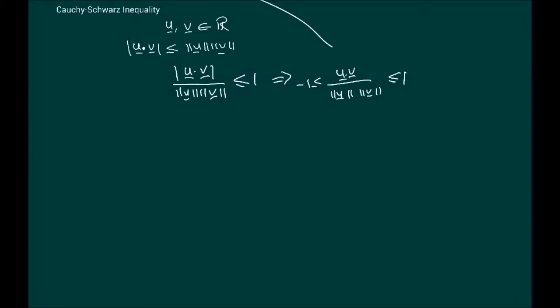What we're going to do next is prove some very interesting inequalities. We're going to look at four different laws, equalities and inequalities. The rules we're going to be using are: first, the Cauchy-Schwarz inequality; and second, the fact that u dot u equals the norm of u squared.